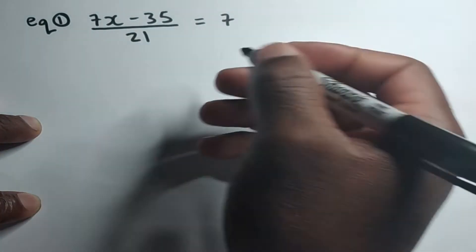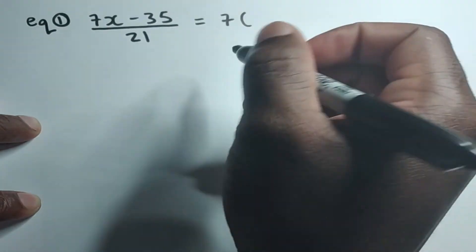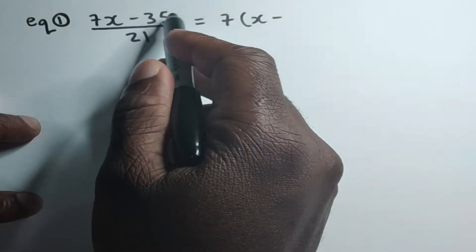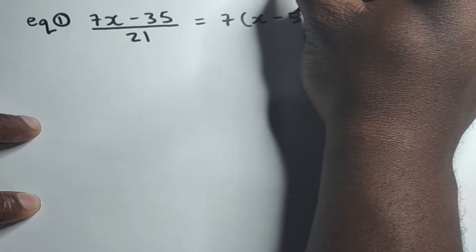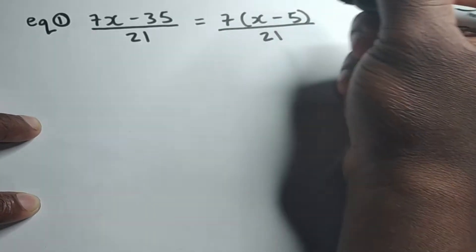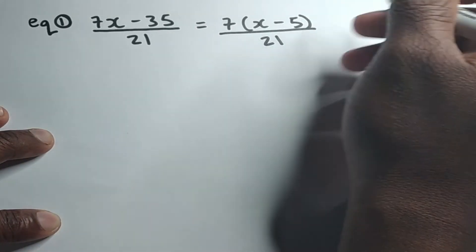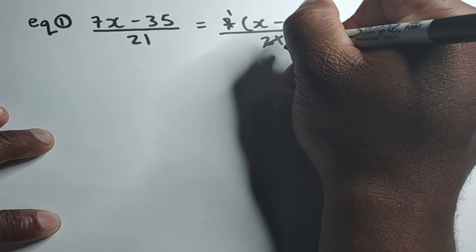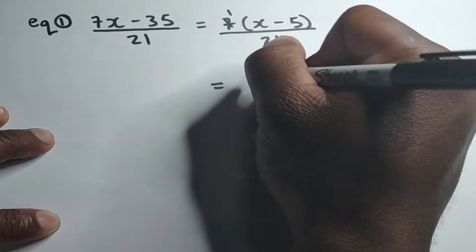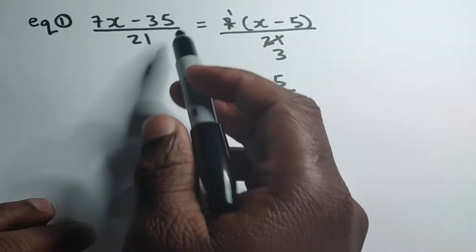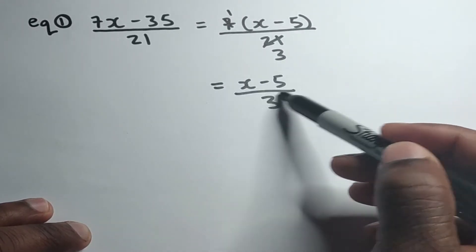Seven can go into itself and into 35 without leaving a remainder. If we factor out seven and divide each term by seven: seven X divided by seven leaves X, and 35 divided by seven is five. In the denominator we still have 21. We can use this seven to reduce 21 — seven into itself goes once, seven into 21 goes three times. So the simplified result is X minus five over three.